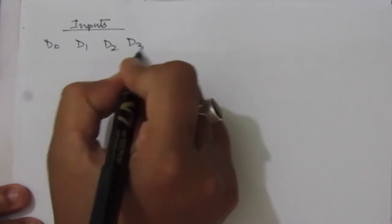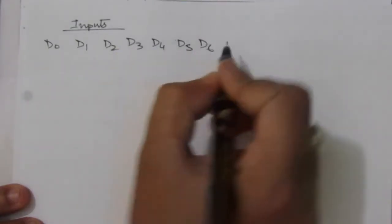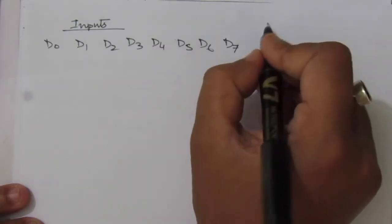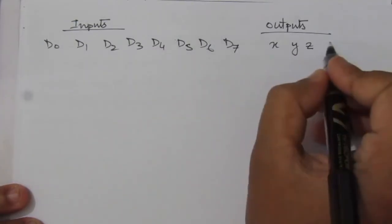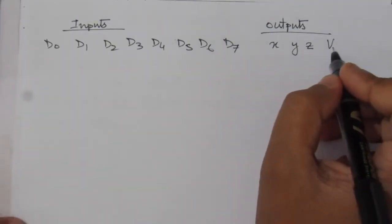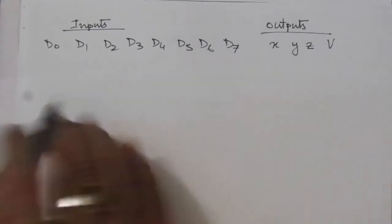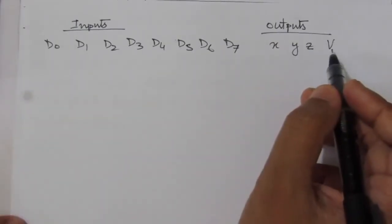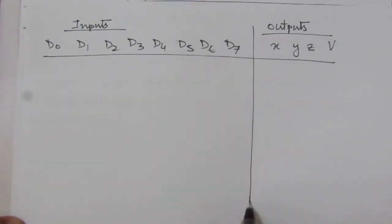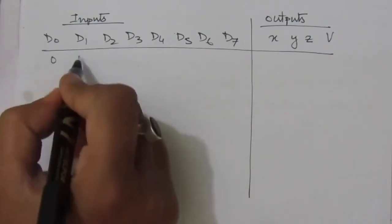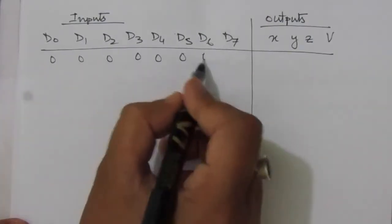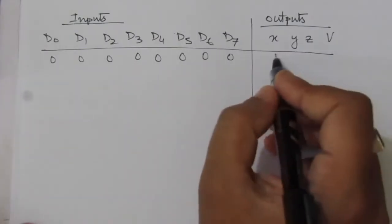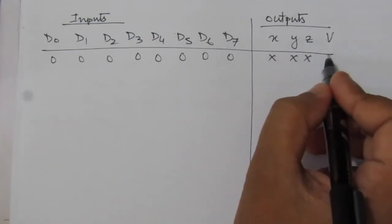In the first part we make the truth table, and in the second part we find the four output values. We have eight inputs: d0, d1, d2, d3, d4, d5, d6, d7, and the outputs are x, y, z, and V. V indicates that if any one or more inputs have a value of one, V will be one. When all inputs are zero, V will be zero. First row: all input values are zero, so x, y, z have don't-care conditions and V equals zero.